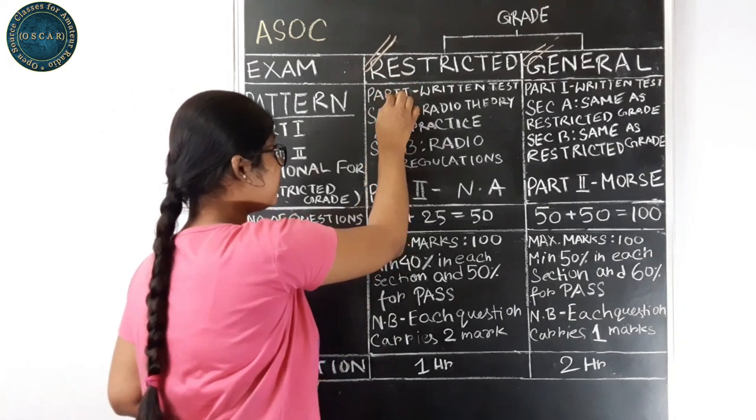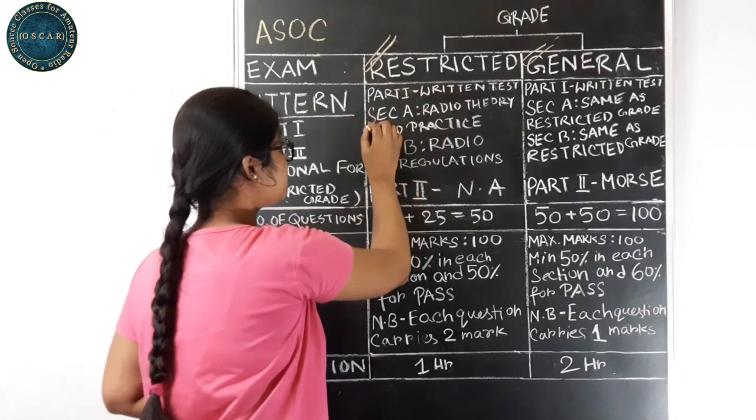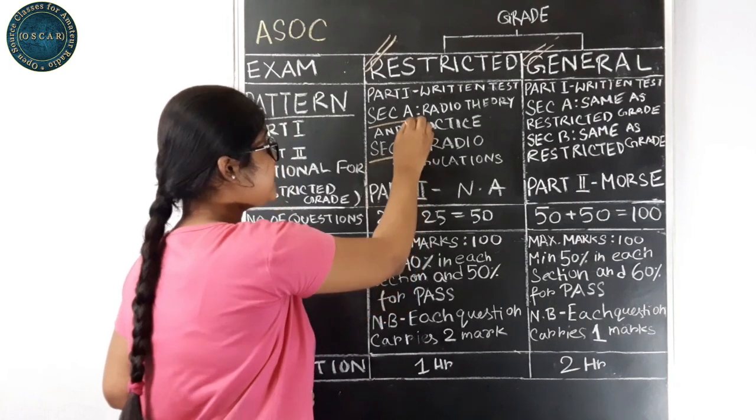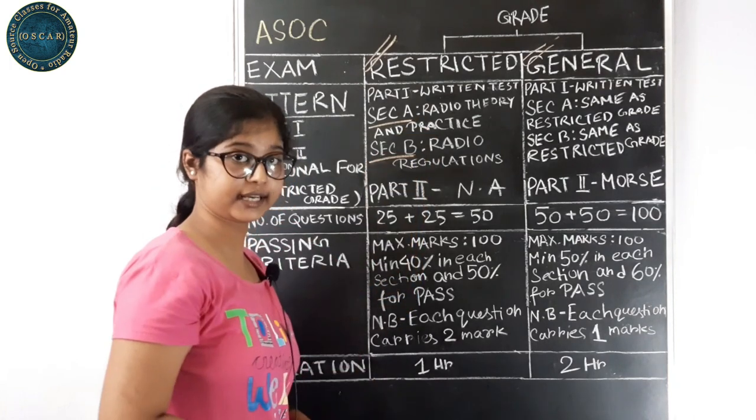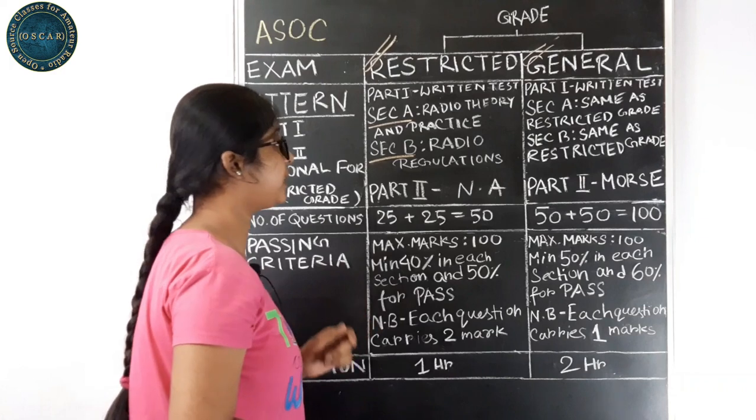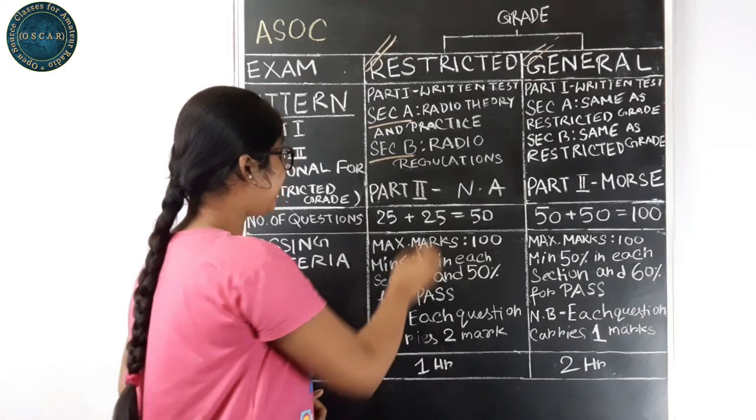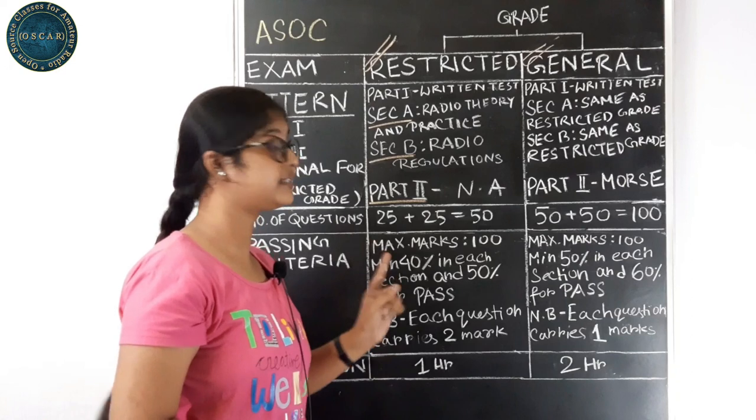In Restricted Grade, part 1 is the written test. It consists of two sections, section A and section B. Section A is Radio Theory and Practice and section B is Radio Regulations. And there is no part 2 in Restricted Grade.